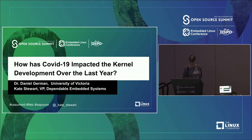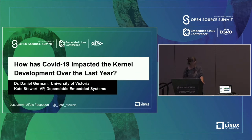I'm a professor in the department of computer science at the University of Victoria, in British Columbia, Canada. I've been doing research on open source for a little bit more than 20 years. One of my main goals is to understand how open source is developed, and then try to identify interesting aspects and practices that can be documented and promoted.